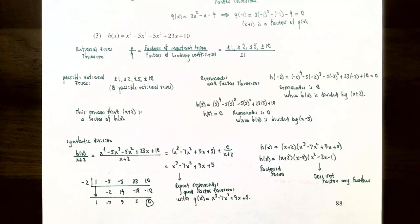That's a good place to stop. We discussed the rational zeros theorem and how to find the rational and real zeros of a polynomial function and write it in factored form. If you have any questions about the examples or the homework for this section, please let me know. In the next video we'll talk about Descartes' rule of signs and continue factoring polynomials to find their real zeros.